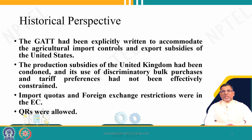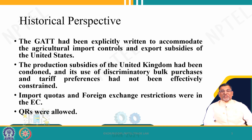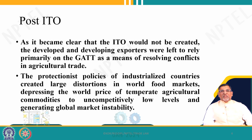Article 11 of GATT specifically prohibits quantitative restrictions, but in the agriculture sector quantitative restrictions were allowed by many countries because of their special requirements. So in the agriculture sector, quantitative restrictions were very common and imports were not allowed in certain areas.